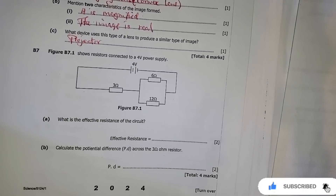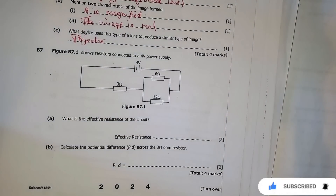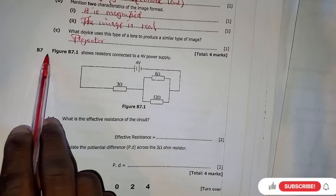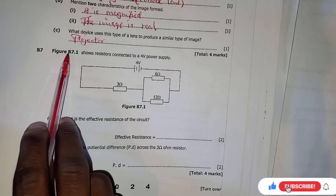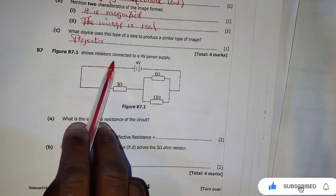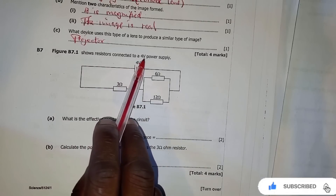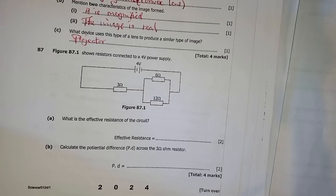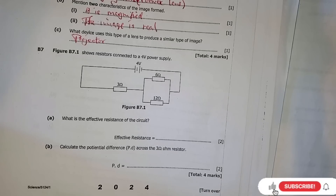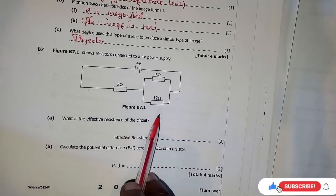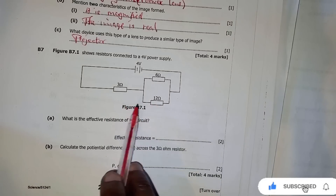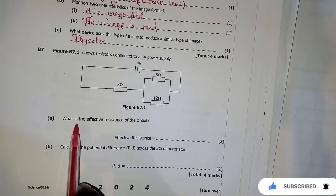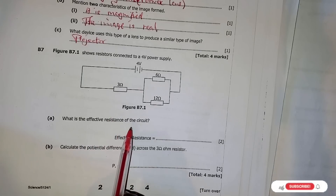Question 7 is under electrical circuits. The question reads: figure B7.1 shows resistors connected to a four-volt power supply. This is a series circuit — actually, is it parallel or series? This is a combined or joint circuit. So what is the effective resistance of the circuit?